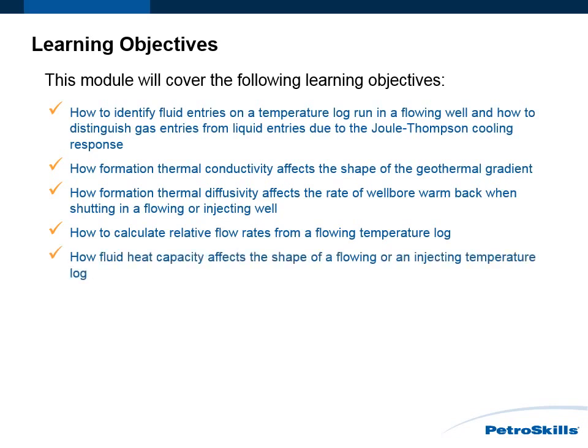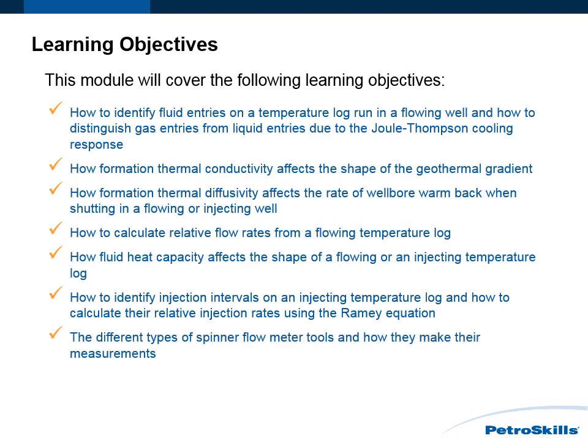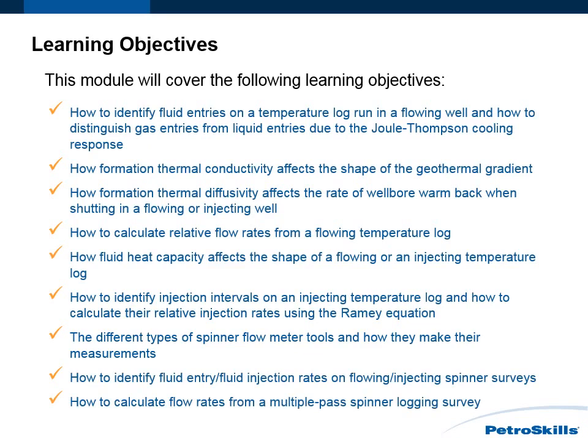How fluid heat capacity affects the shape of a flowing or an injecting temperature log. How to identify injection intervals on an injecting temperature log and how to calculate their relative injection rates using the Ramey equation. The different types of spinner flow meter tools and how they make their measurements. How to identify fluid entry and fluid injection rates on flowing and injecting spinner surveys, and how to calculate flow rates from a multiple pass spinner logging survey.